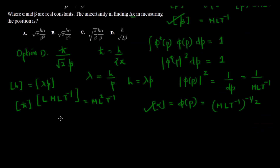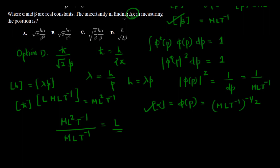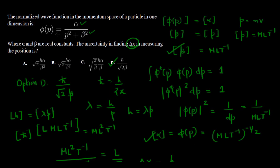Since ΔX is a position uncertainty, it must have the dimension of length L. Option D gives exactly that. Checking the other options won't give dimension L, so option D — ΔX = ℏ/(√2 · β) — is the correct answer. Doing this the straightforward way would require converting to real space and performing difficult integrations.